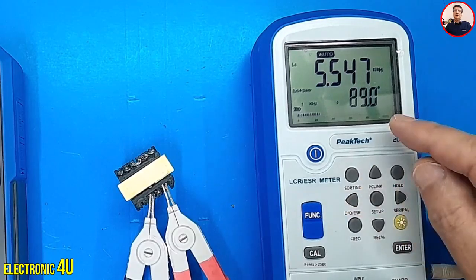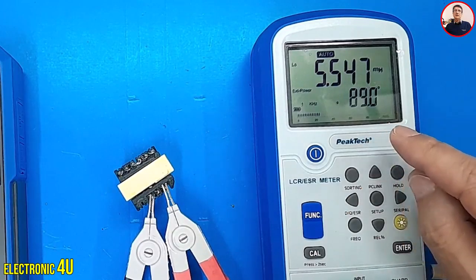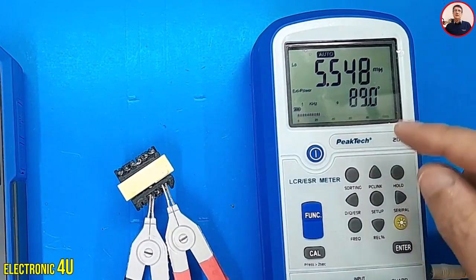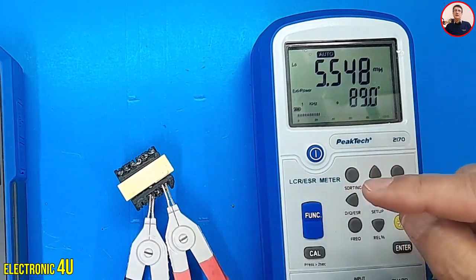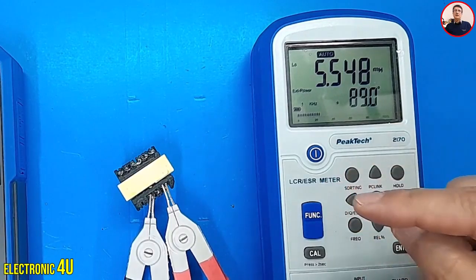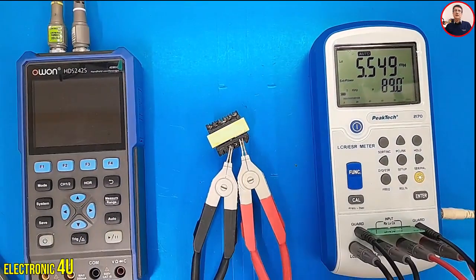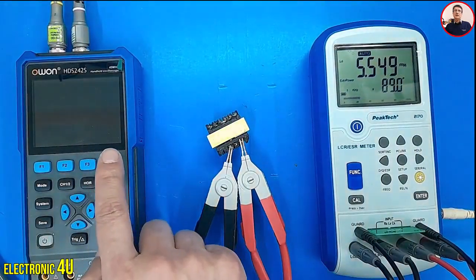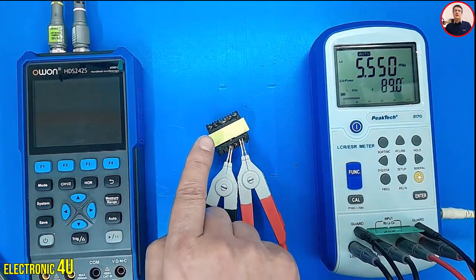What matters to us is the phase angle. This number should be close to plus 90 degrees. When the LCR meter is connected to the transformer, it injects a sine signal into the inductor, causing magnetic induction in the secondary winding.